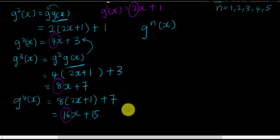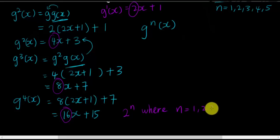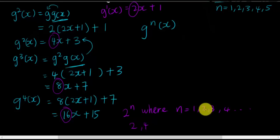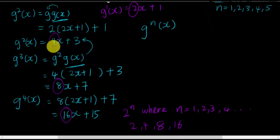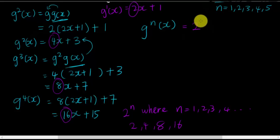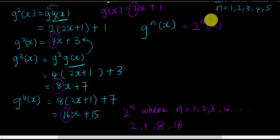The first thing coming to my mind is 2 to the power of something. If I call it 2^n, where n equals 1, 2, 3, 4 — when n=1, I get 2; when n=2, I get 4; when n=3, I get 8; when n=4, I get 16. Exactly matching. So the x-coefficient of g^n(x) is 2^n · x. That part is solved.